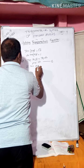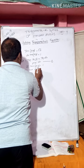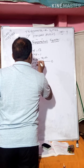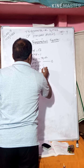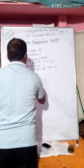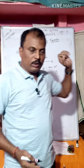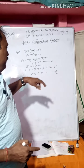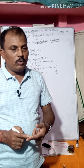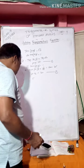Then √3·tan(A-B) = 1, so tan(A-B) = 1/√3, which equals tan30°. So A - B = 30°. This is equation 2. Same as the previous question: A + B = 60° and A - B = 30°. So A = (60+30)/2 and B = (60-30)/2. You can find the values on your own.